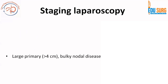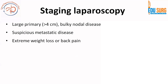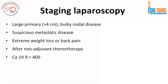When thinking of biliary drainage, consider these points and apply them case by case rather than making it a protocol for all cases. Coming to staging laparoscopy: it helps in identifying peritoneal seedlings. Indications include tumor size more than 4 centimeters, bulky nodal disease, suspicious metastatic disease after extensive workup, extreme weight loss or back pain suggestive of plexus involvement, and after neoadjuvant therapy before open surgery.